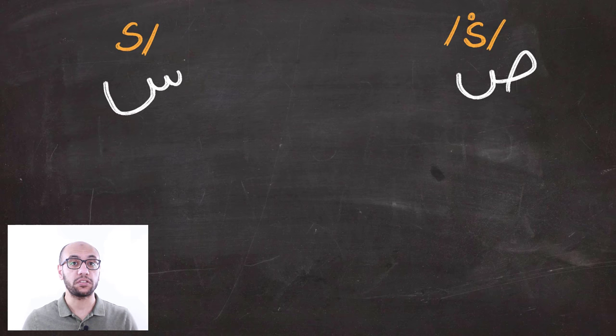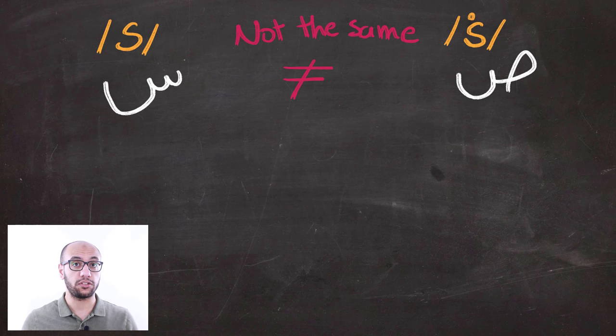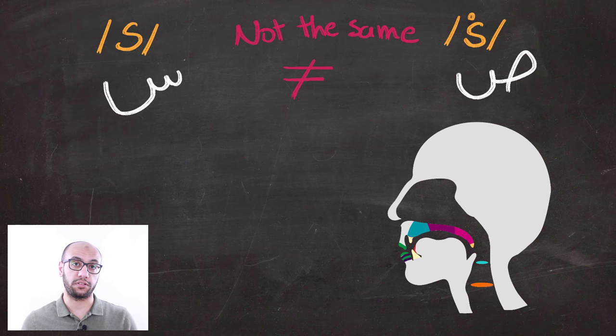Sa must not be confused with Se sound. While both are pronounced at the alveolar ridge, the shape of the tongue makes all the difference.